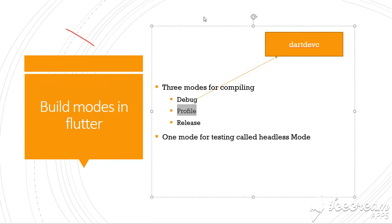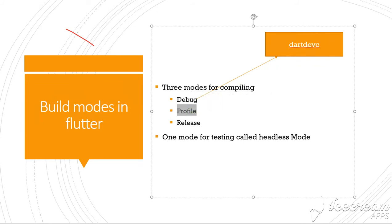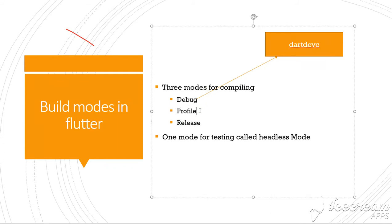Profile mode is something in between debug mode and release mode. Some part of debugging is enabled, but not all of it — only the part related to device performance, as the name 'profile' suggests. It is closer to release mode, but with some tracing information related to app performance enabled.